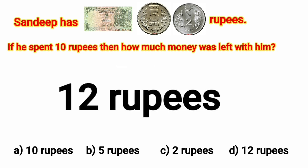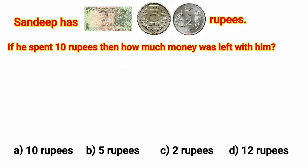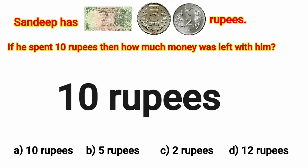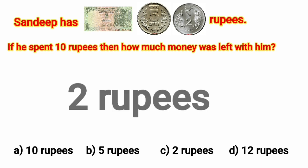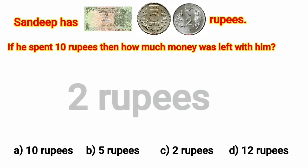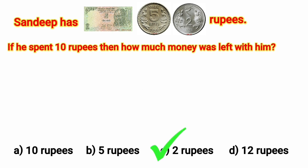How much money did he spend? 10 rupees. And how much money was left with him then? 12 minus 10 is equal to 2 rupees. Sandeep was left with 2 rupees. Option C is the correct answer. We will put a tick mark here.